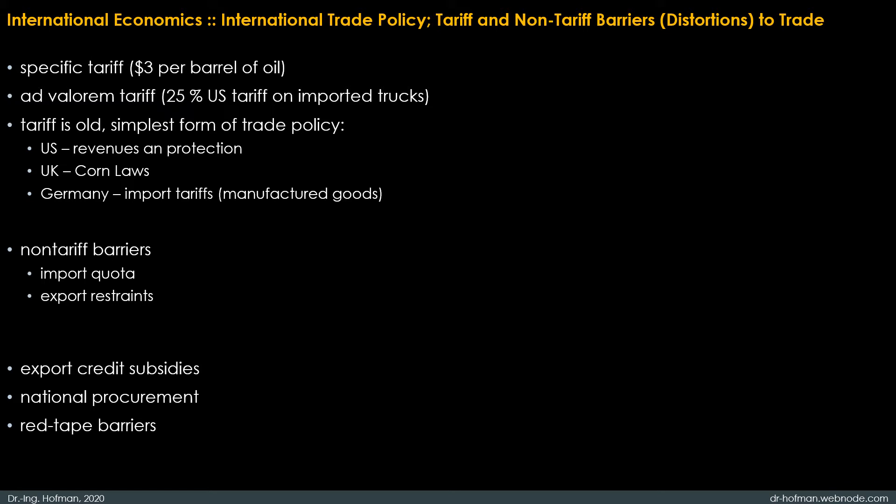Secondly, national procurement: purchases by the government or strongly regulated firms can be directed toward domestically produced goods, even when these goods are more expensive than imports. The classic example is the European telecommunications industry. The nations of the European Union in principle have free trade with each other. However, the main purchases of telecommunications equipment are phone companies, and in Europe these companies have until recently all been government owned. These government-owned telephone companies buy from domestic suppliers even when those suppliers charge higher prices, resulting in very little trade in telecommunications equipment within Europe.